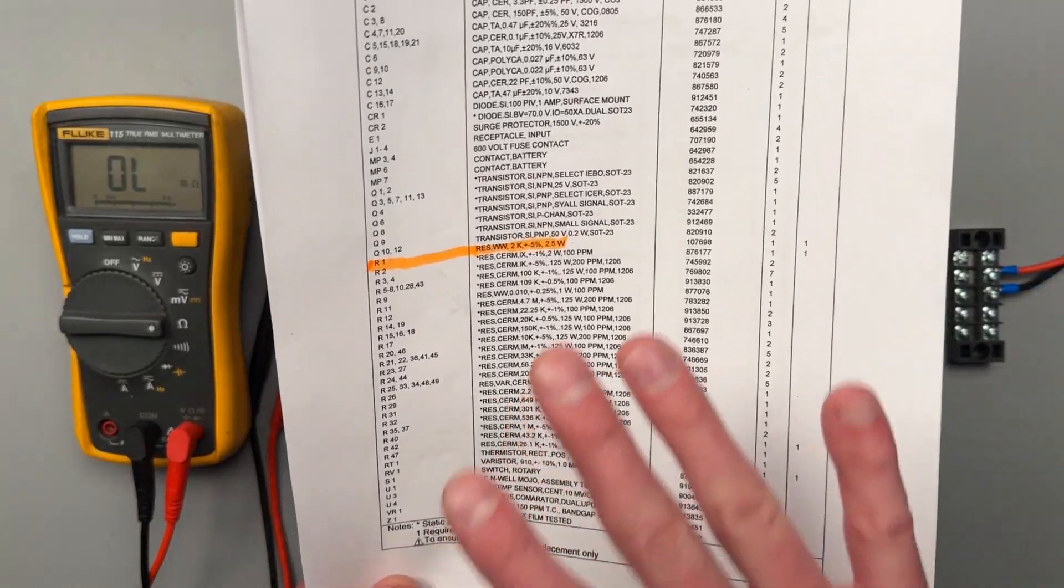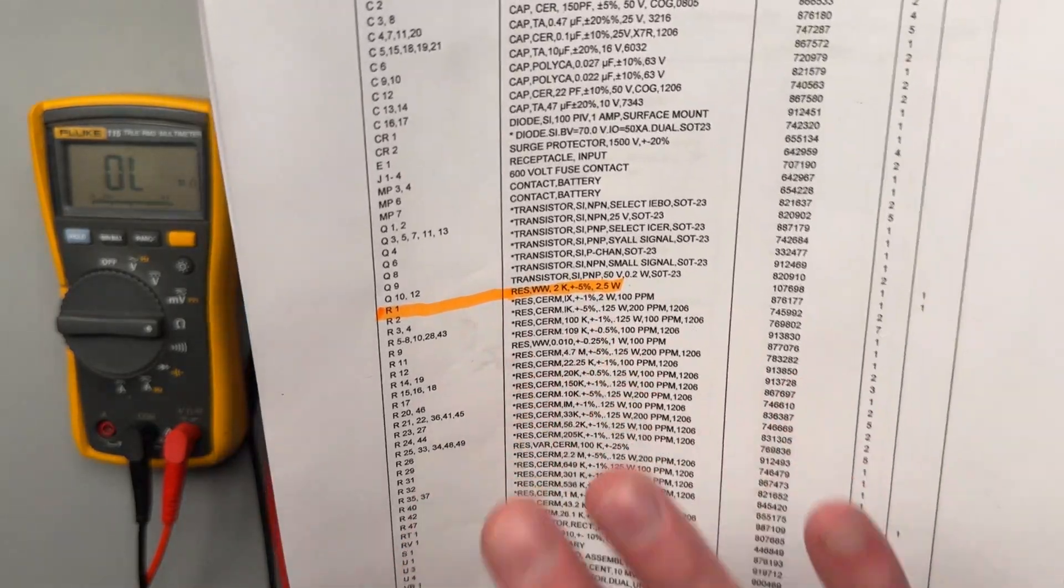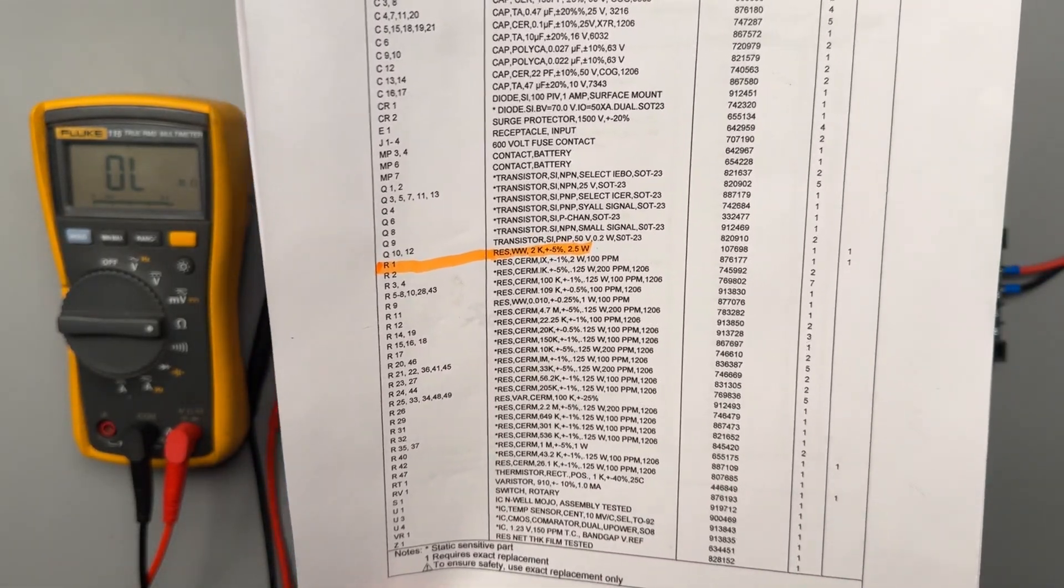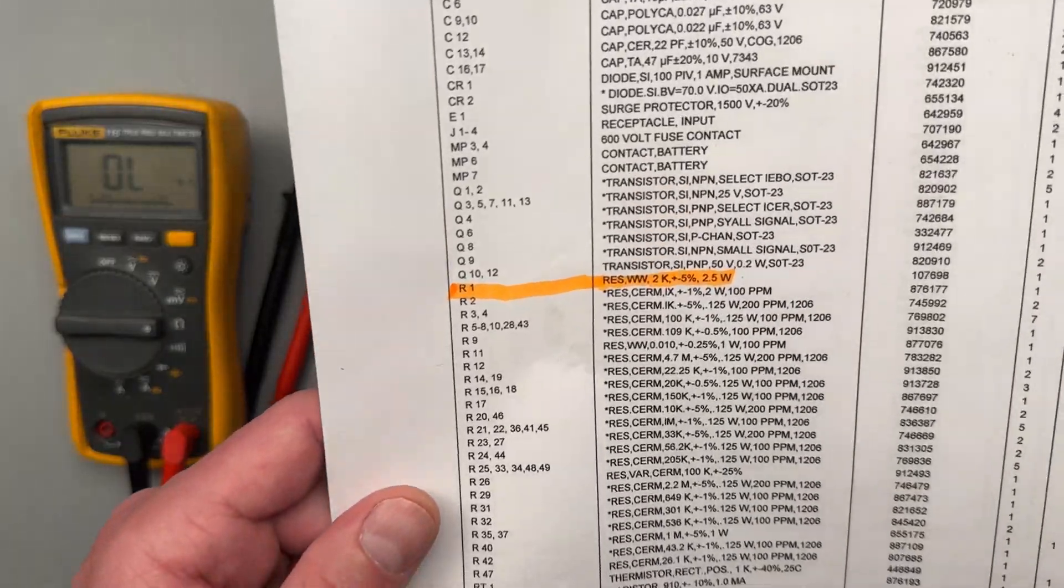And they do supply a part number, a Fluke part number, but this resistor has been discontinued. So I got the closest thing that I could. And what would you want to look for when doing something like that?